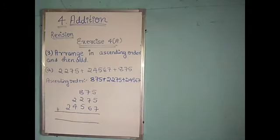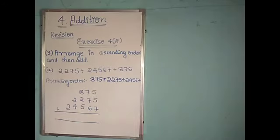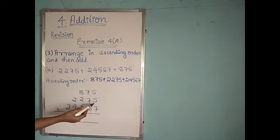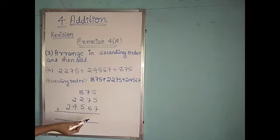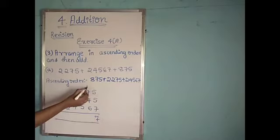Now we will start addition from the ones place. 5 plus 5 is 10. 10 plus 7 is 17. So I will write 7 here and carry 1.